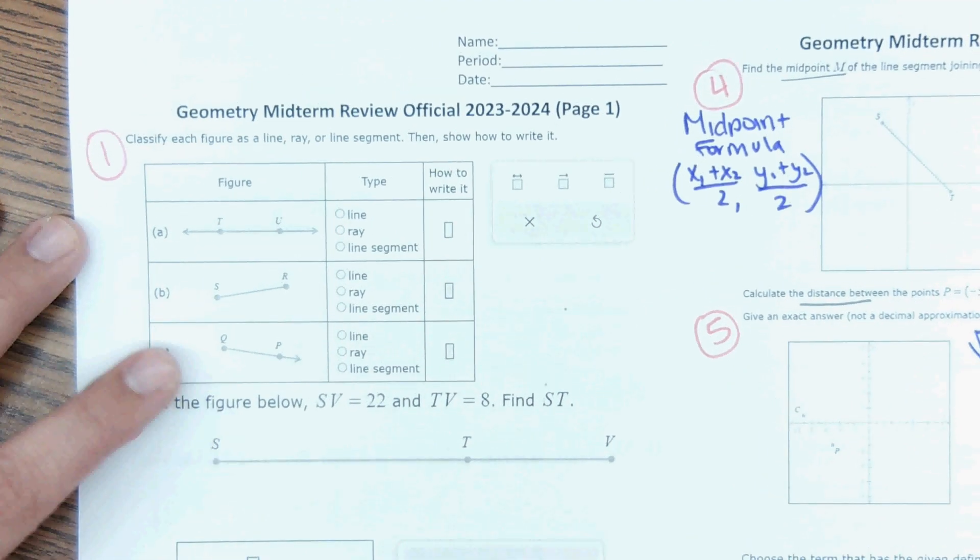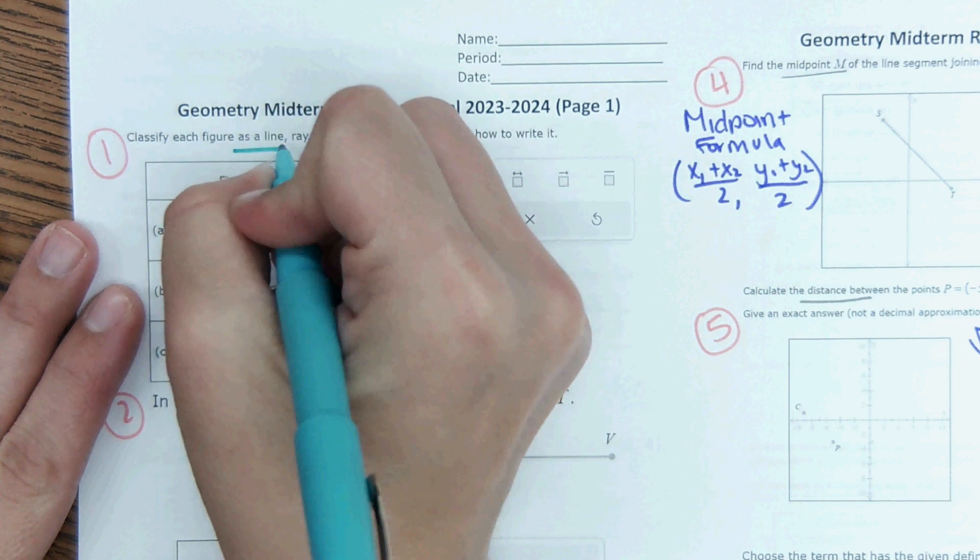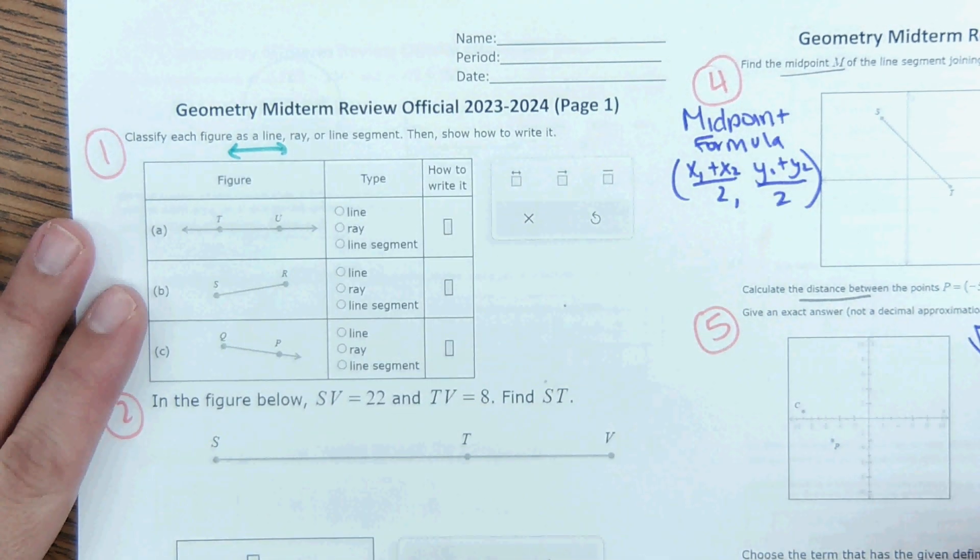So the first one, it says classify each figure as a line, ray, or line segment. This may seem pretty easy. Just let it be easy. Don't overlook the easy stuff because you need the easy stuff to maximize your score.